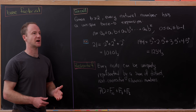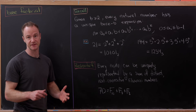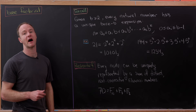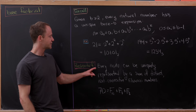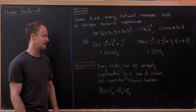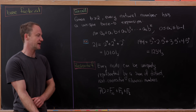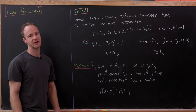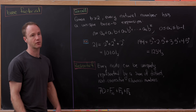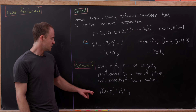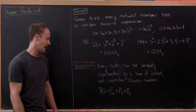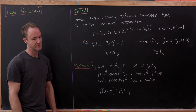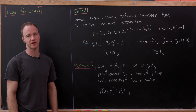Previously on the channel, we talked about so-called base Fibonacci expansion of numbers, and that's called Zeckendorf's theorem. Check out the video after you're done watching this one if you're interested. It says that every natural number can be uniquely represented by a sum of distinct, non-consecutive Fibonacci numbers. If you drop the non-consecutive rule, you do not get a unique representation. For example, 70 can be written as the 10th Fibonacci number plus the 7th plus the 3rd, that is, 55 plus 13 plus 2.